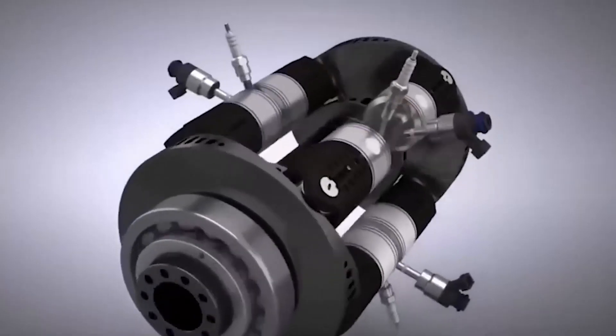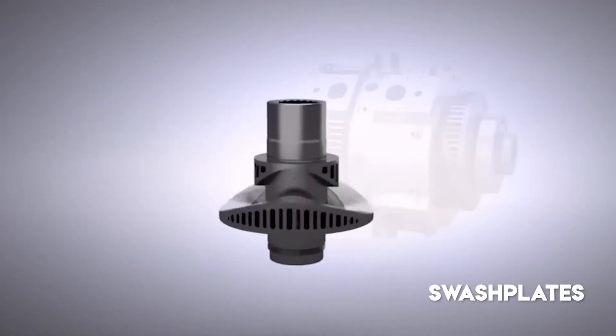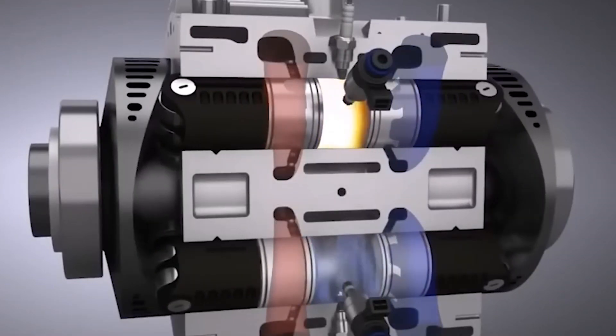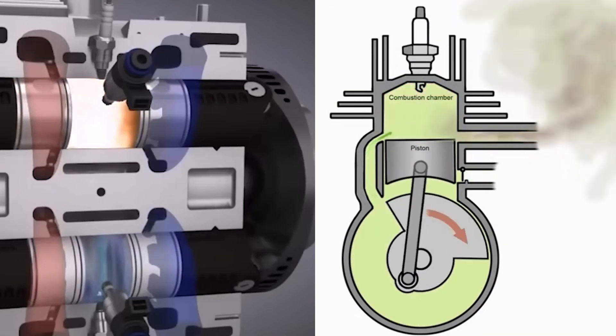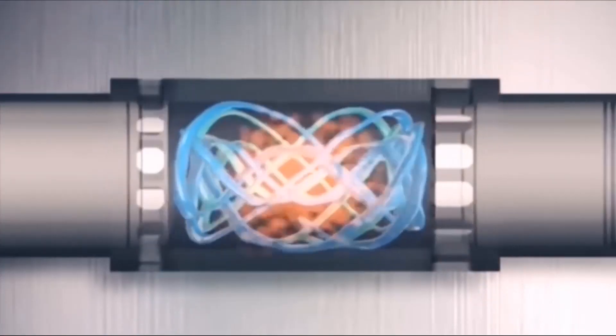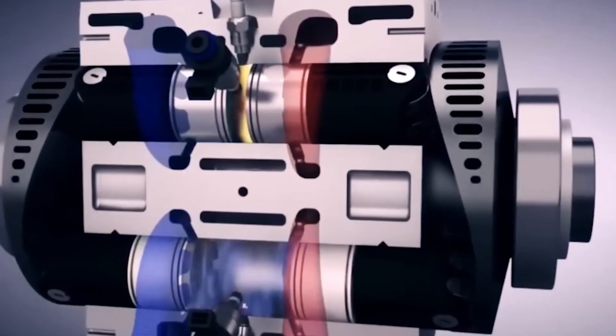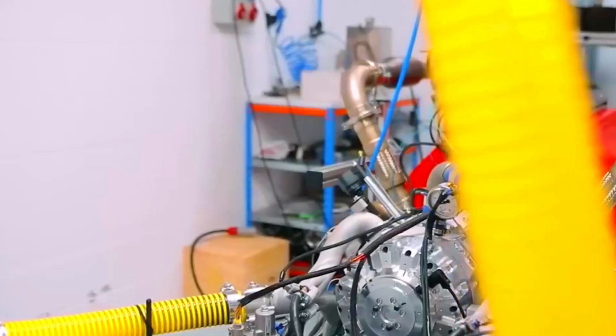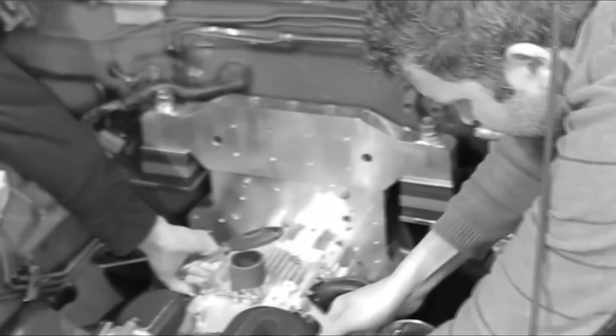By adopting this opposed-piston design with interlinked swashplates, the E-REX engine seeks to strike a balance between the advantages and drawbacks of conventional two-stroke engines. This innovative configuration opens up possibilities for improved efficiency, reduced emissions, and increased power output, making it an intriguing and potentially groundbreaking development in the realm of internal combustion engines. However, further research, testing, and analysis are required to validate its real-world performance and claims.